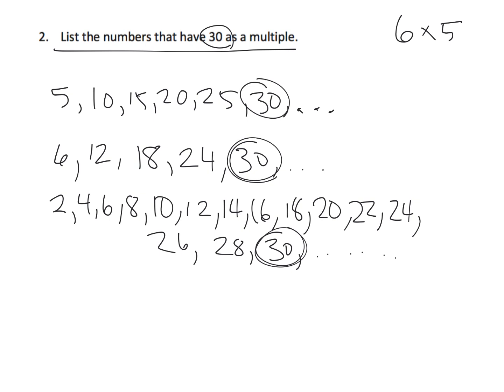Well, 2 times what? Because it needs a partner. Well, that'd be 2 times 15. And then can we think of another two numbers that would have a product of 30? Because we need partners, right? Well, another one would be 1 times 30.